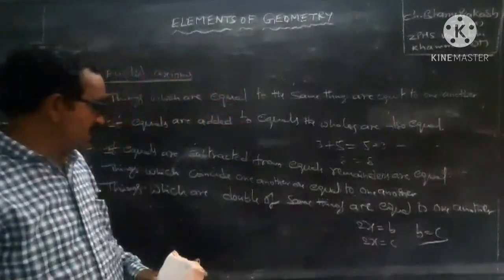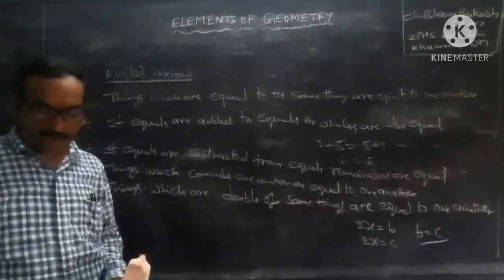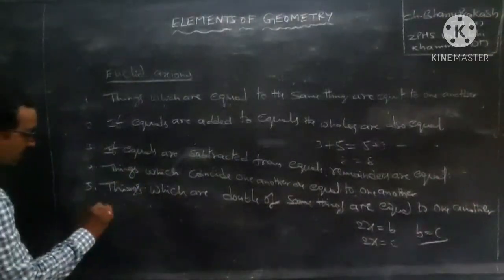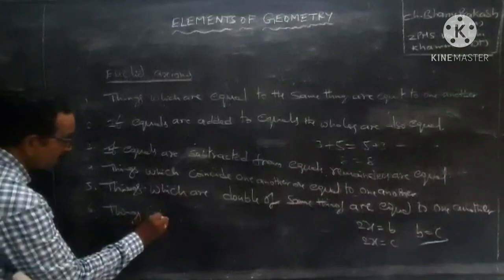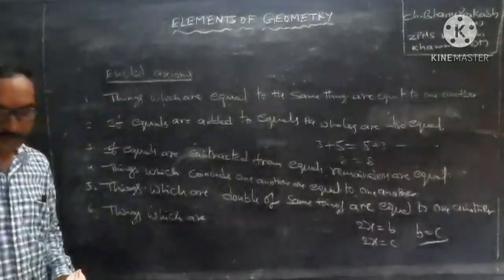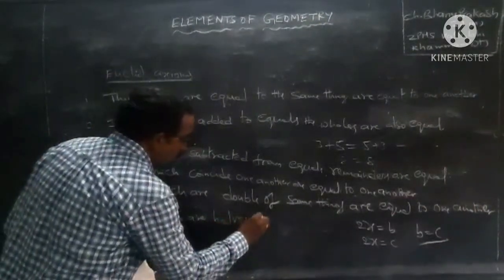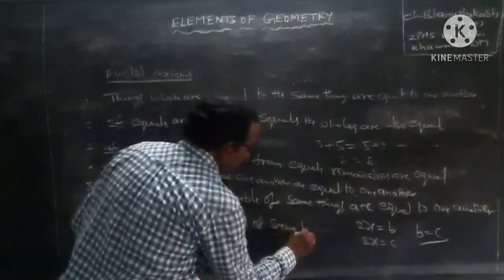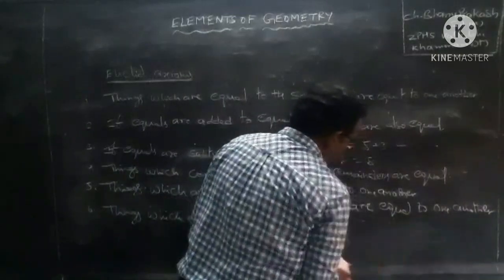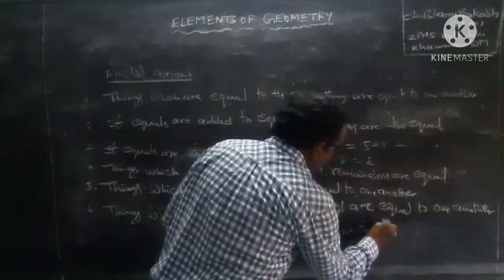And next: things which are halves of the same things are equal to one another.